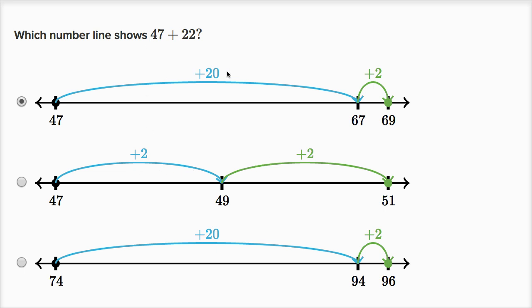To add 22, you have to add 20 and then two. And this choice right over here, we are adding 20 and then we're adding two, but we're not starting at 47, we're starting at 74. So this is 74 plus 22. So I definitely feel good about that choice right over there.